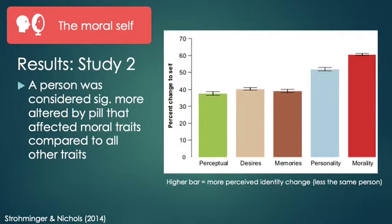Note, too, that the extent to which memories affected perceptions of identity depended on whether they were social in nature. Traumatic memories or memories of parents were more likely to be considered possible causes of identity change compared to memories of how to get things done or get places.